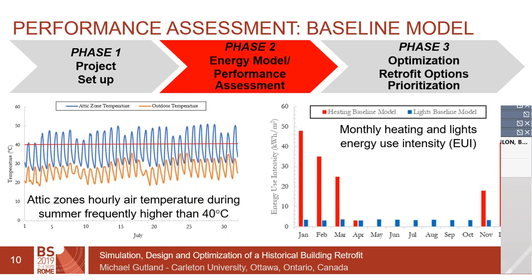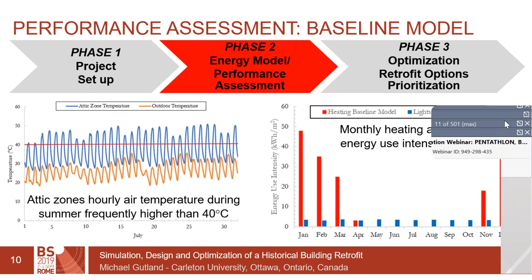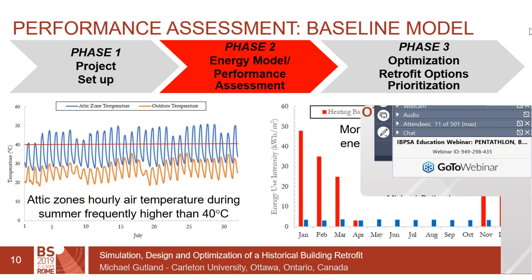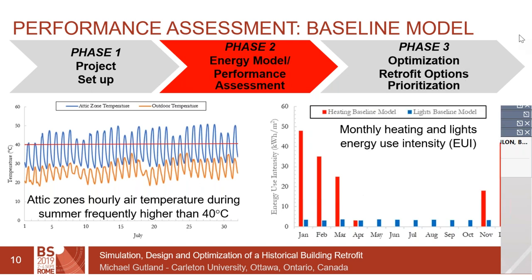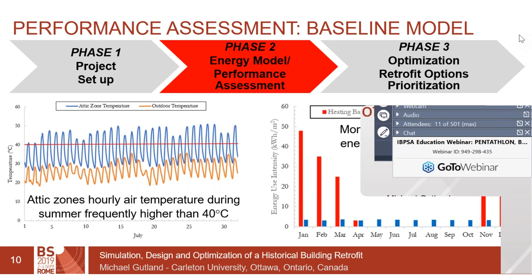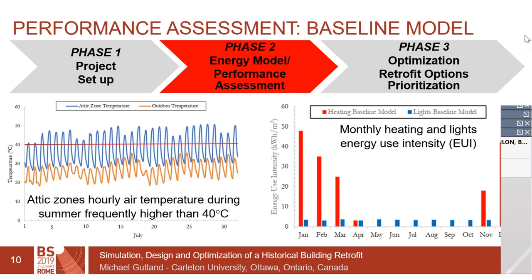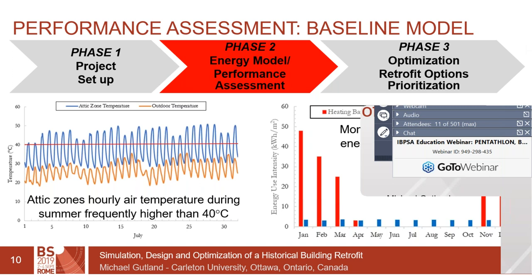Once we had a working model we examined what the results were telling us: what areas of concern are there, and is our model realistic for a building of this typology in this climate? This was compounded by the fact that we were given no measured data — such as annual heating loads or typical indoor climate. One of the first things we looked at was indoor temperatures. Our preliminary model was returning temperatures inside the attic upwards of 40 degrees Celsius in mid-summer, which is obviously uncomfortable. There was a large diurnal spike in the model temperatures.